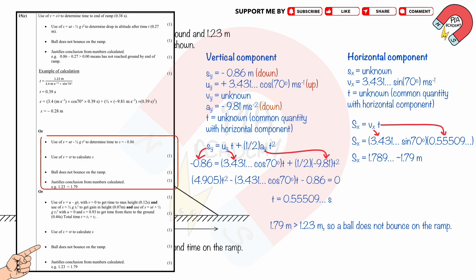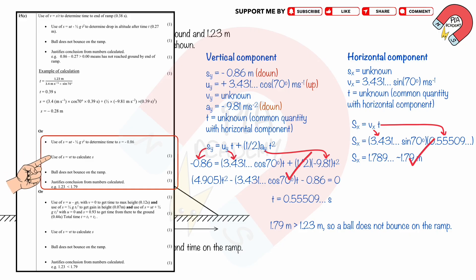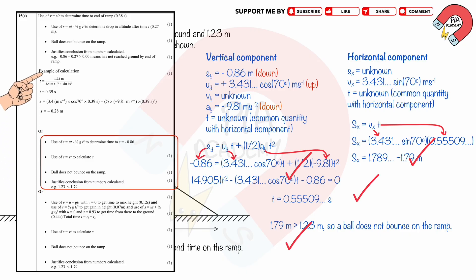Since the horizontal displacement of 1.79 meters is greater than 1.23 meters, the ball does not bounce on the ramp. You get four marks from: using s equals ut plus half at squared, using s equals vt, the correct conclusion, and correct working in the calculation.